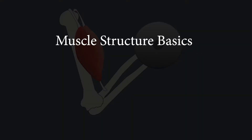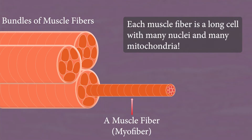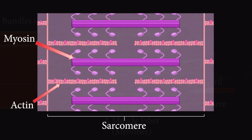First we should understand some basics of muscle structure. A muscle is made up of bundles of muscle fibers surrounded by connective tissue. Each muscle fiber is actually a single long cylindrical cell that has lots of nuclei and mitochondria. Inside of each muscle fiber we have many smaller myofibrils. Each myofibril is divided into sections called sarcomeres. These are made largely of two proteins that allow muscles to contract: actin and myosin.